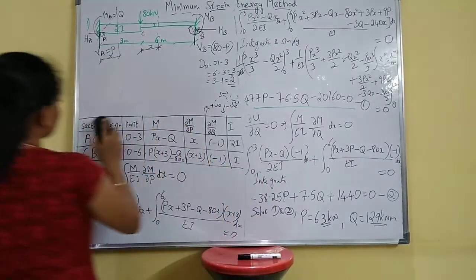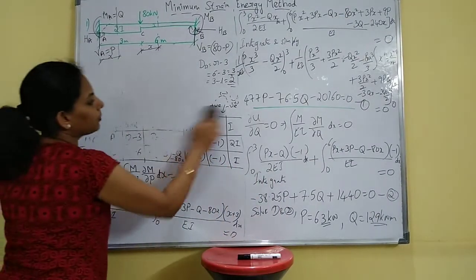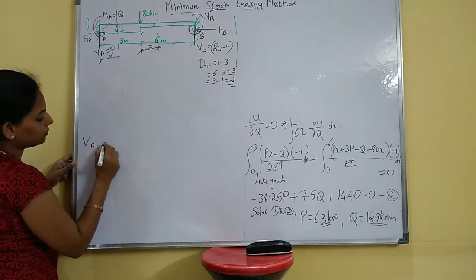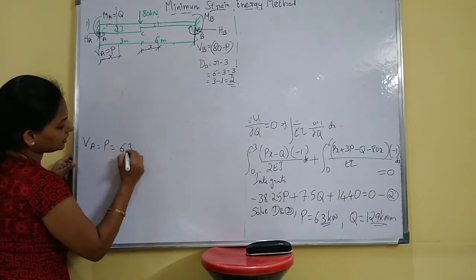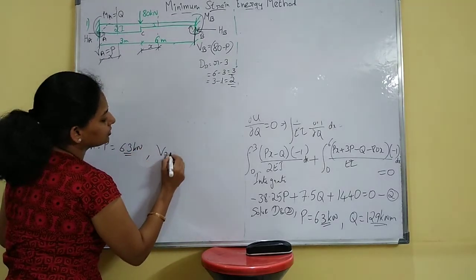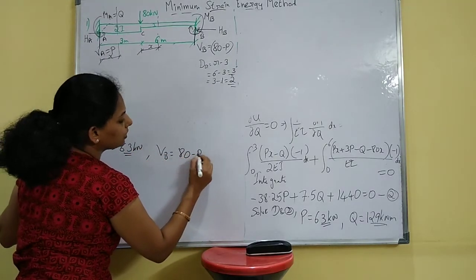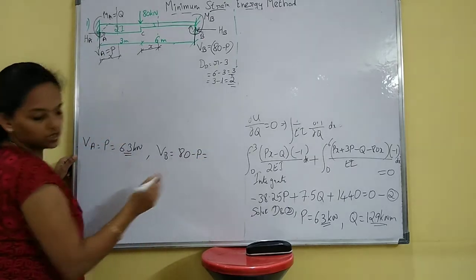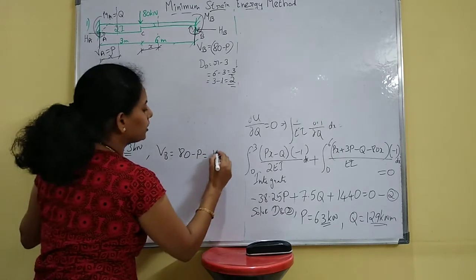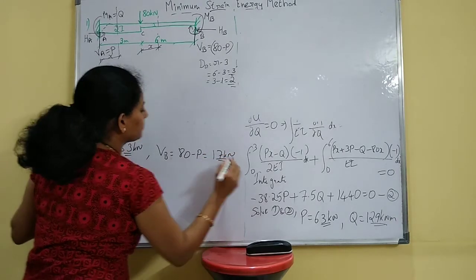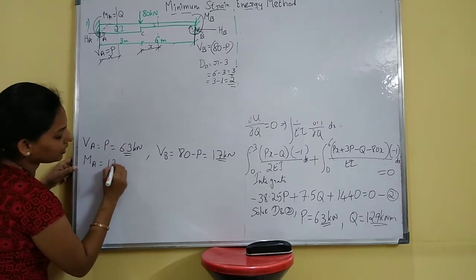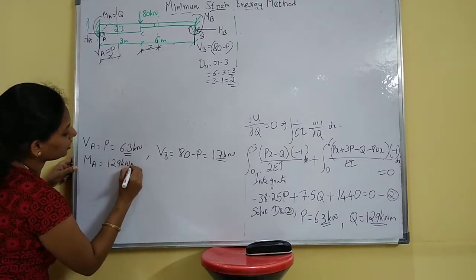Next, find out and draw the bending moment diagram. P is known, so V_A = P = 63 kilonewton. V_B = 80 − P = 80 − 63 = 17 kilonewton. M_A is directly known as 129 kilonewton meter.